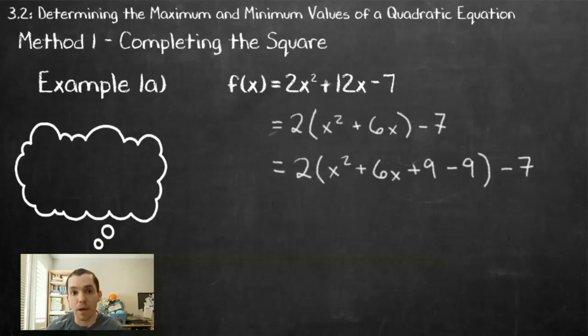In our next step, I don't want that minus 9 inside the brackets, because that isn't part of my perfect square, so I'm going to move it out of the brackets. In order to do so, I have to multiply by the coefficient 2, giving me minus 18.